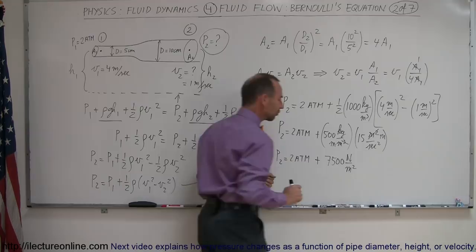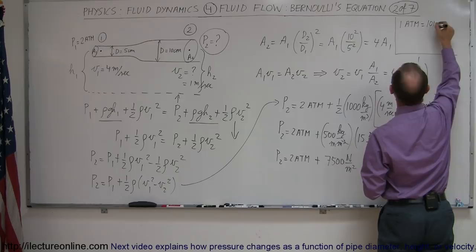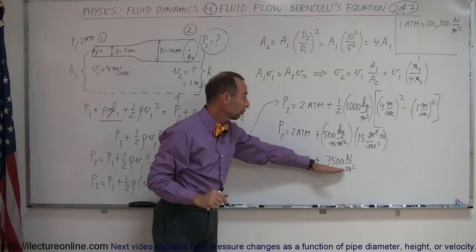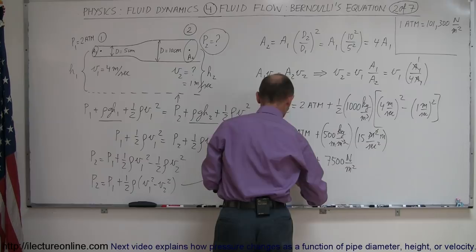This would be 7,500 newtons per square meter. And, of course, we want to convert that to atmospheres. And the conversion from atmospheres to Pascals or Pascals to atmospheres, right here, we can say that one atmosphere is equal to 101,300 newtons per square meter. So this is actually a rather small fraction of an atmosphere. What we have to do is divide this by 101,300 newtons per square meter to convert to Pascals. So we have 7,500 divided by 101,300.